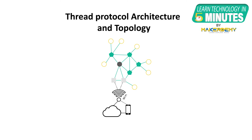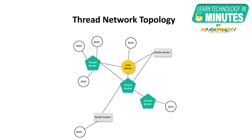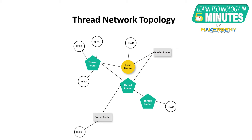First, let us look at the Thread protocol architecture and its topology. The Thread architecture is based on the IEEE 802.15.4-2006 standard. This is a Thread network topology. A Thread network topology establishes connections with other devices via a border router. The communication within this network is based on 802.15.4 and it forms a self-healing mesh.